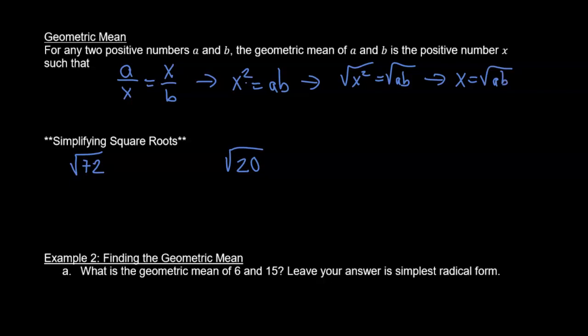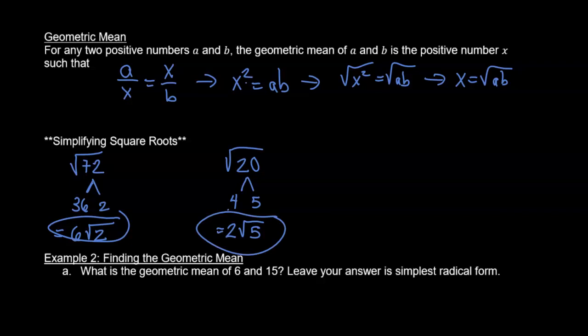You need to be able to simplify square roots. For the square root of 20, divide by the largest known perfect square — 4 goes into 20, giving 4 times 5. The square root of 4 is 2, so this is 2 times the square root of 5. For the square root of 72, the biggest perfect square that goes in is 36. The square root of 36 is 6, so we get 6 times the square root of 2.